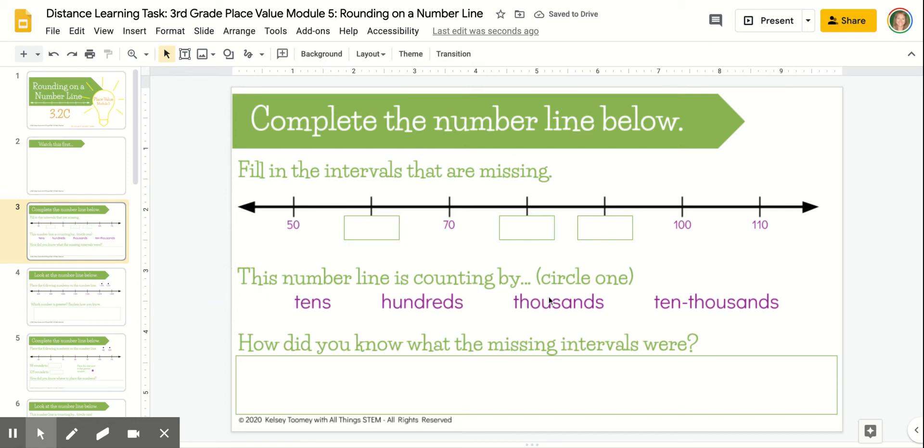In order to circle what the number line is counting by, you can go to the top, select the drop-down menu, and choose the scribble tool. That will allow you to create a circle in order to select your answer here. Then you're going to tell a little bit about how you knew what those missing intervals were.